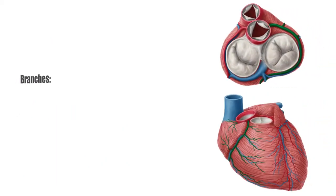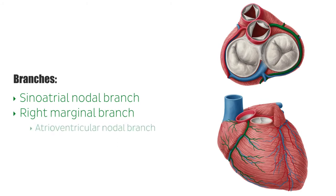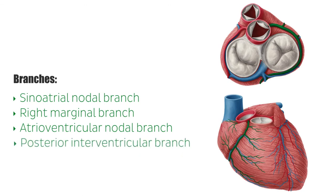This artery further divides into several branches including the sinoatrial nodal branch, the right marginal branch, which runs to the right margin of the heart, and the atrioventricular nodal branch, which supplies the atrioventricular node at the junction of the four heart chambers within the septae on the posterior side of the heart. Lastly, a posterior interventricular branch runs along the posterior interventricular groove.